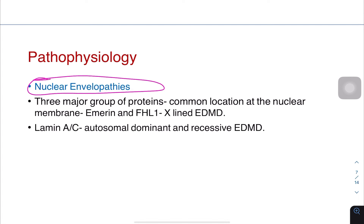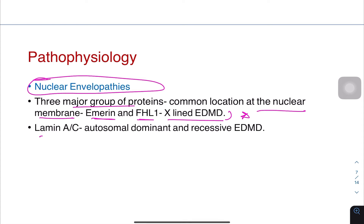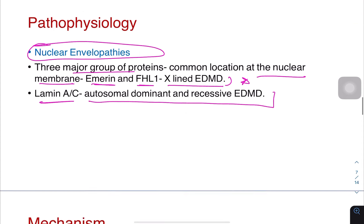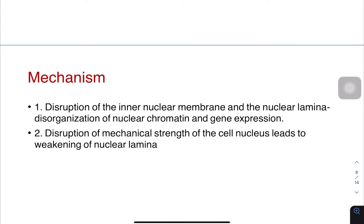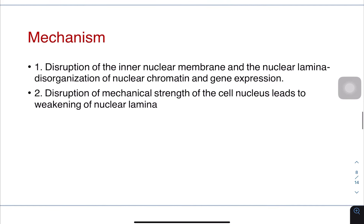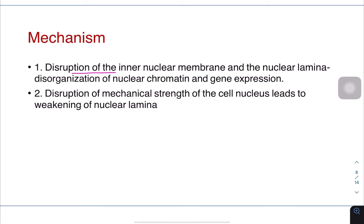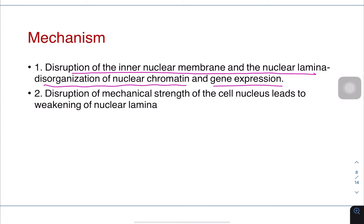Regarding pathophysiology, these are all nuclear envelopathies involving nuclear membrane proteins. There are three major groups of proteins located in the nuclear membrane. One is emerin, and there is FHL1; emerin and FHL1 are associated with X-linked EDMD. Lamin is associated with autosomal dominant and recessive EDMD. They are hypothesized to cause disease by two mechanisms: disruption of the inner nuclear membrane and nuclear lamina leading to disorganization of nuclear components and gene expression, and disruption of the mechanical strength of the cell nucleus leading to weakening of the nuclear lamina.